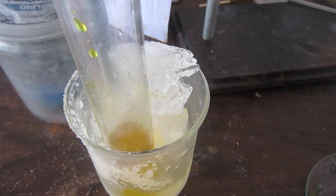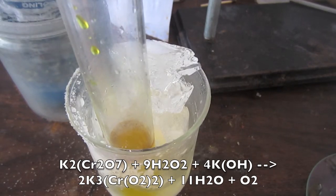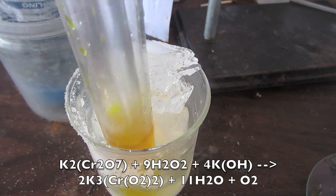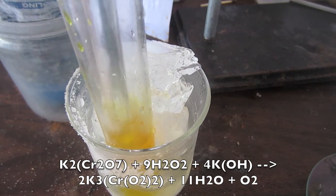add the 30% hydrogen peroxide solution very slowly to the potassium chromate potassium hydroxide solution. You'll notice a color change. What is happening is the hydrogen peroxide is reacting with potassium chromate and potassium hydroxide to form potassium tetraperoxyl chromate and water.